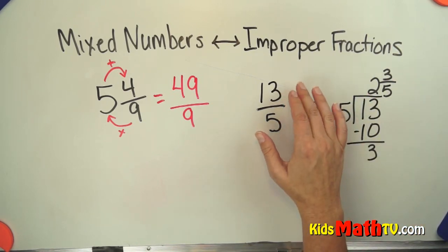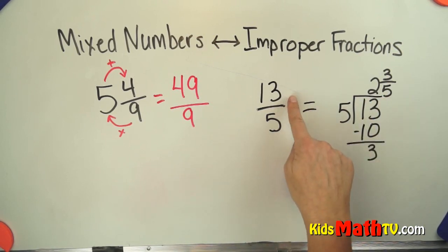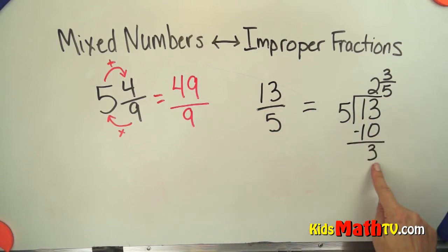So to go from an improper fraction to a mixed number, you divide. Then your remainder becomes your numerator. Your divisor is your denominator.